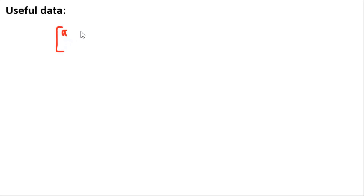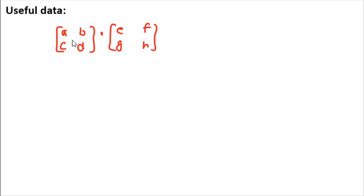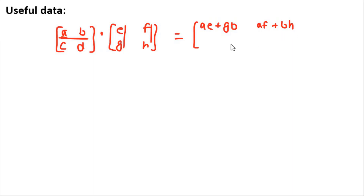The useful data for this question is the multiplication of two 2x2 matrices. If you have matrix A with elements a, b, c, d and another matrix with elements e, f, g, h, then multiplying them gives: first element = ae + bg, second element = af + bh, third element = ce + dg, and fourth element = cf + dh.